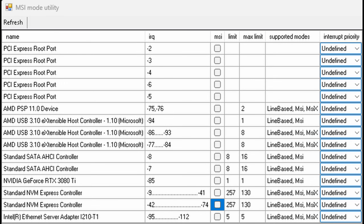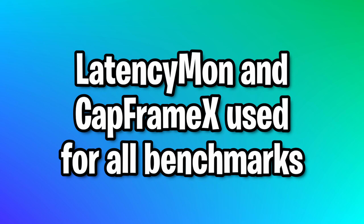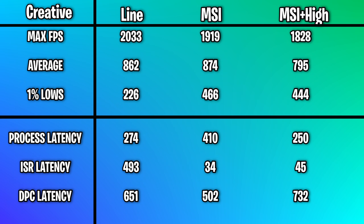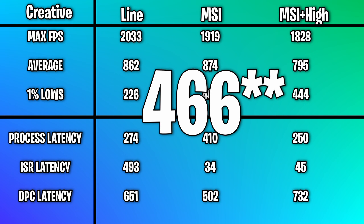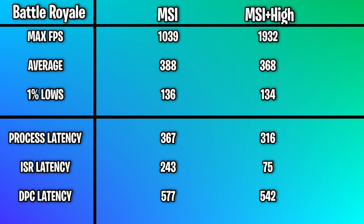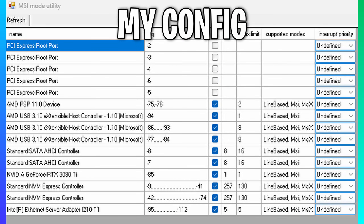Benchmark time. The first set of benchmarks was done with no MSI mode at all — everything unchecked. Doing this completely bricked my PC and took about two hours to fix, so please don't turn off MSI mode for everything. I was only able to get creative benchmarks with that mode. For tests 2 and 3, I added MSI mode along with battle royale benchmarks. For latency across all three creative tests, MSI mode without priority had the best latency and FPS with its 1% lows being 444. In battle royale, MSI with priority had the largest difference in max FPS and better ISR latency, but unfortunately lower average FPS. Long story short — use MSI mode at the very least, and feel free to experiment with priorities.